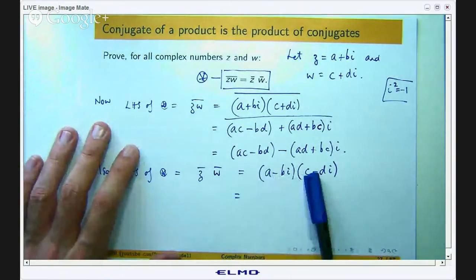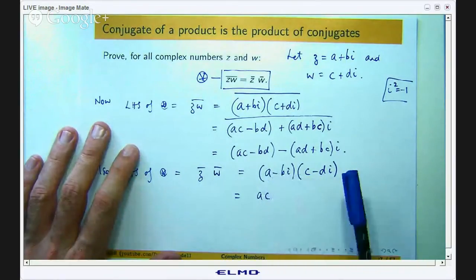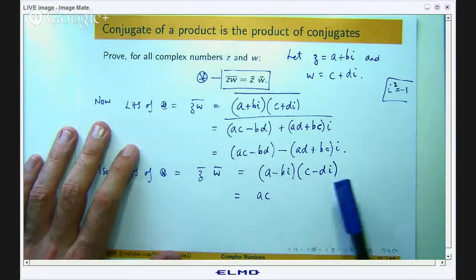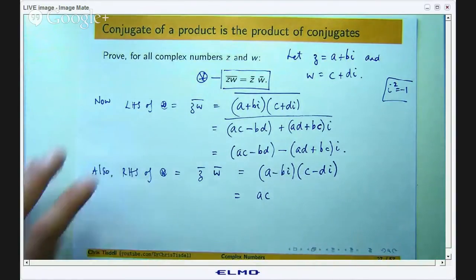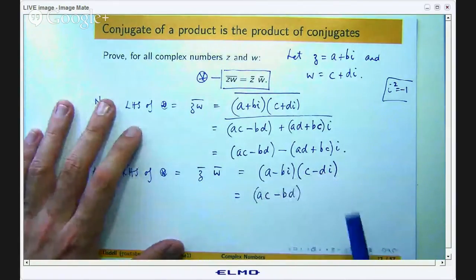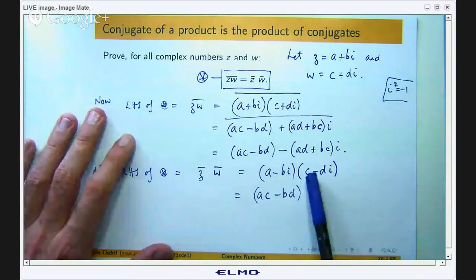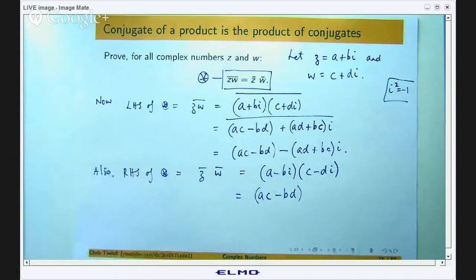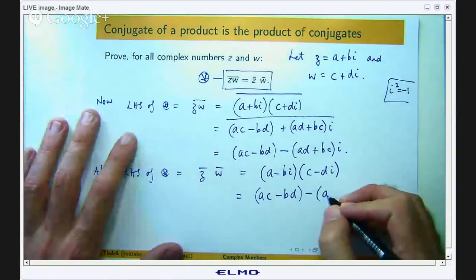Okay so the real part is going to be ac and negative bi times negative di, so the negatives will cancel and you will get bdi squared. i squared again is negative 1. So you are going to get negative bd there and let us work out the calculations involving the i's. I am going to get negative cbi minus adi. So I have got a common minus sign there and I can write it like this.